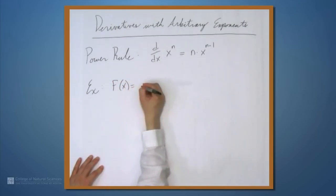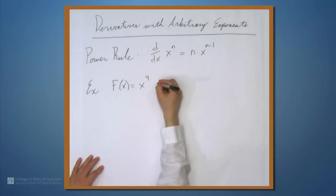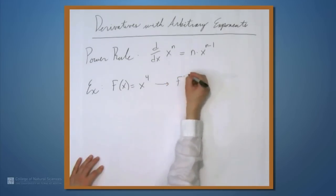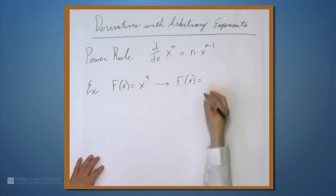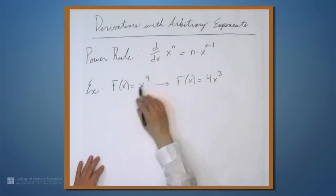If f(x) equals x to the fourth, then it's what we usually see first. This is just a nice positive integer. So this means that f'(x) is 4 times x cubed. The 4, the exponent, comes down out front, and then the new exponent is 4 minus 1, which is 3.